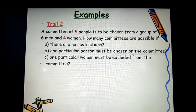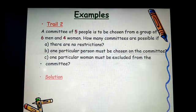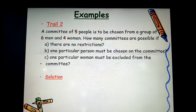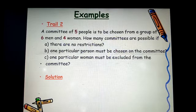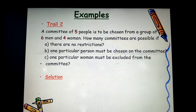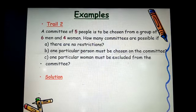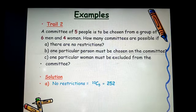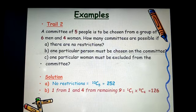Okay. Solution. Now, a committee of 5 people is to be chosen from a group of 6 men and 4 women. How many committees are possible if there are no restrictions? No restrictions means that the men and women are considered the same. So, we are selecting 5 from 10. That is 10 combination 5.